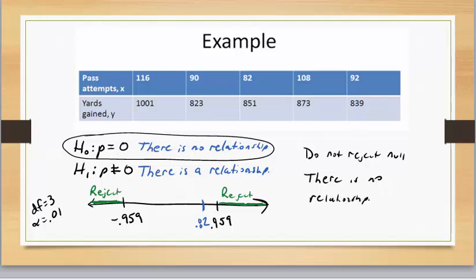Which means that when I'm looking at an R value of 0.82, that I would conclude that it is not close enough to positive one to conclude that there's a relationship. That it actually falls back towards zero, where we say there is no relationship between the variables.